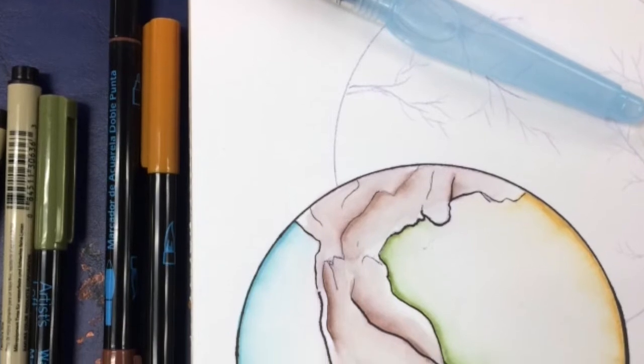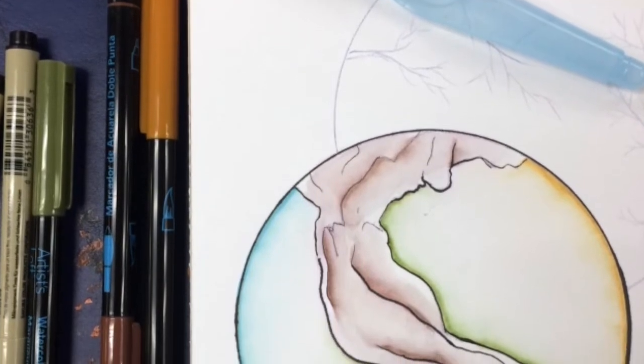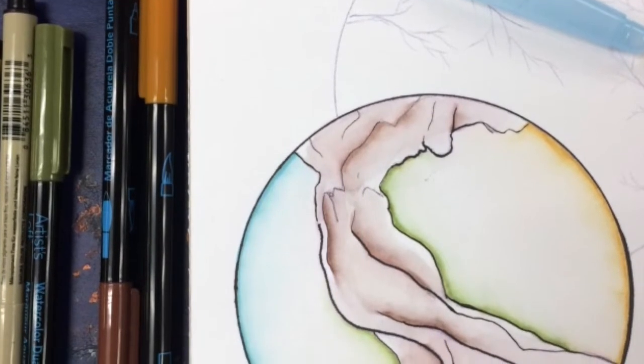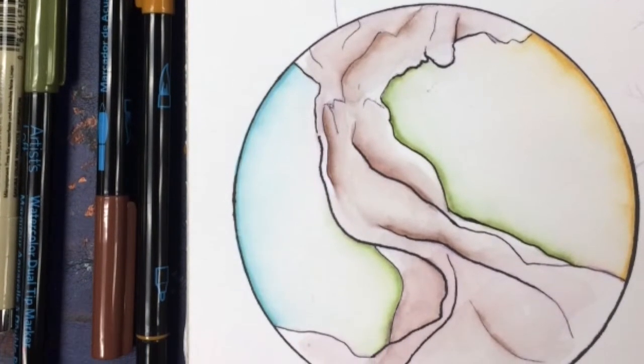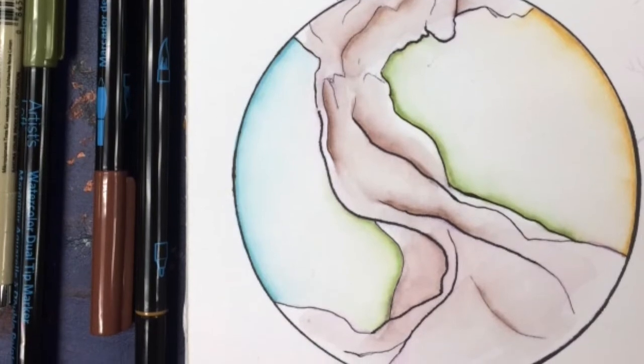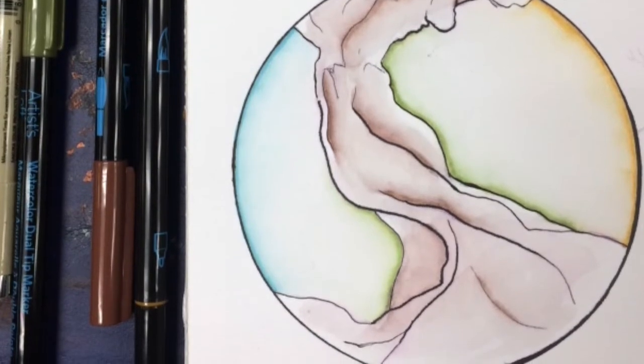If you've seen any of my other videos, you know I'm a huge fan of minimalist art and supplies. All you really need is a journal, a pen, some markers, and watercolor brushes. I use specifically Tombow watercolor markers.